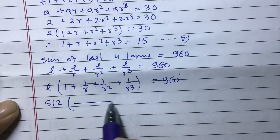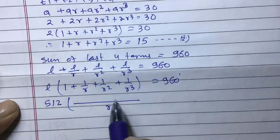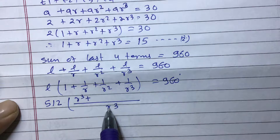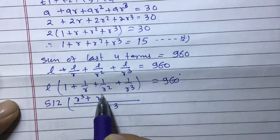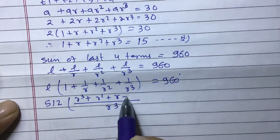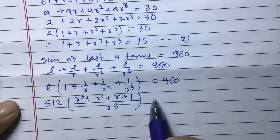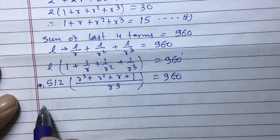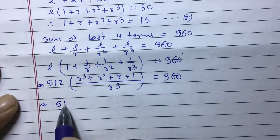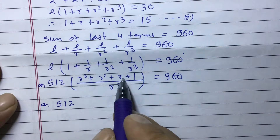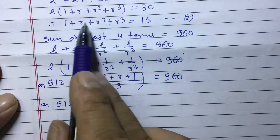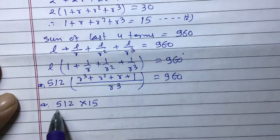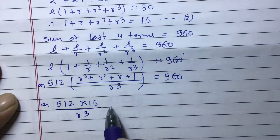Taking LCM as r³, we get 512 times (r³ + r² + r + 1) divided by r³ equals 960. Now notice that r³ + r² + r + 1 is the same expression we found earlier, which equals 15. So we substitute: 512 times 15 divided by r³ equals 960.